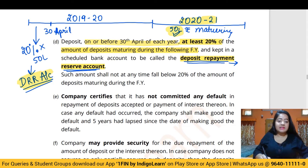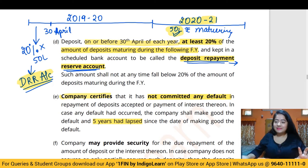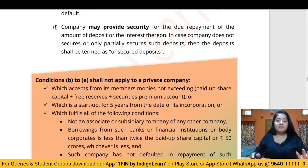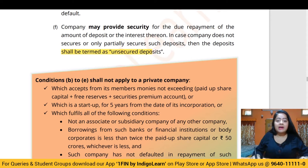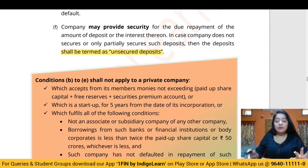The company itself must also certify that it has not committed any default in repayment of deposits or interest, or that any default has been made good and five years have elapsed since rectification. Additionally, deposits may be secured or unsecured, but if they are unsecured, they must be specifically described as 'unsecured deposits' in the contract.